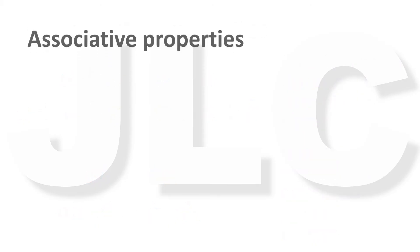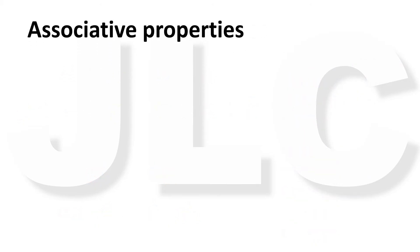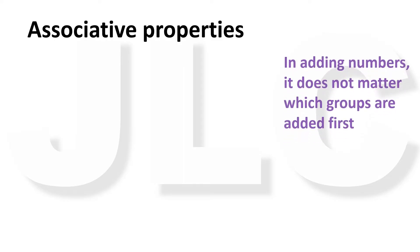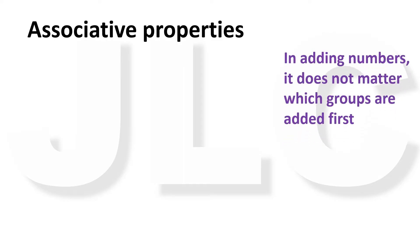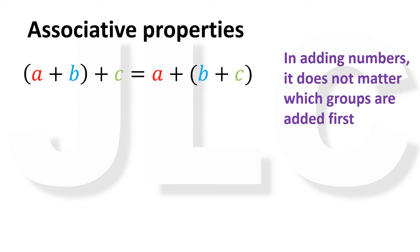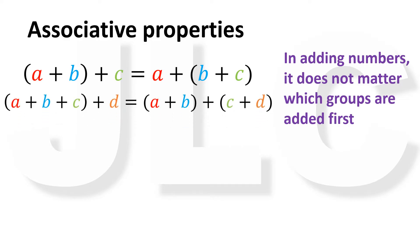The associative property also applies to addition and multiplication. For addition, it states that when we add numbers, it doesn't matter which groups are added first. The sum of A and B plus C is the same as A plus B and C. The sum of A, B, and C plus D is equal to the sum of A and B plus the sum of C and D.